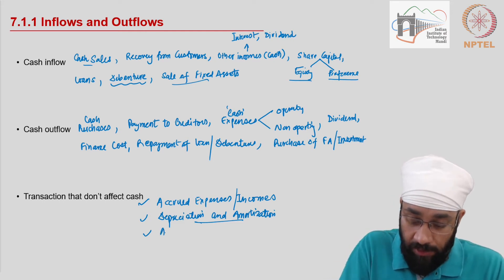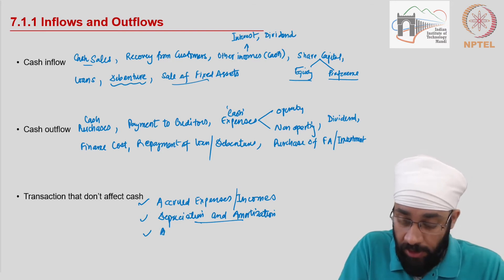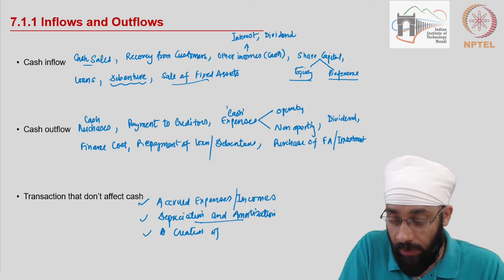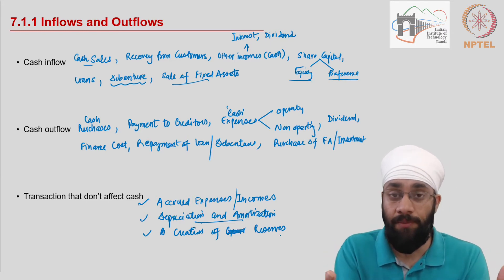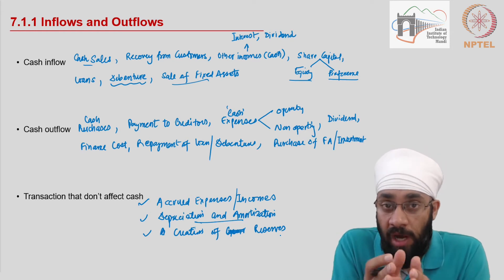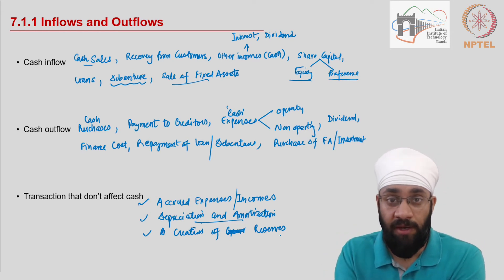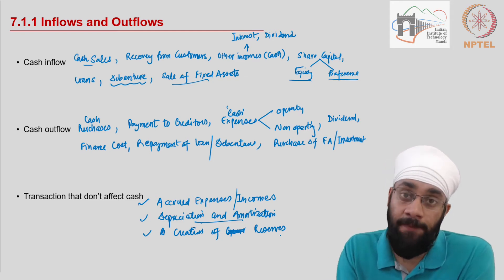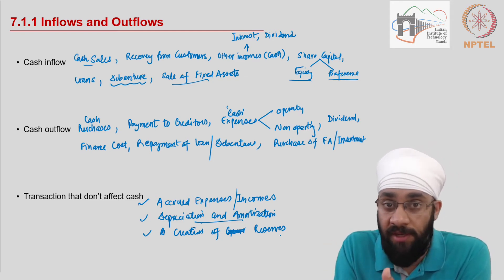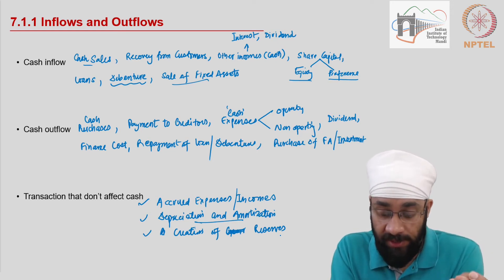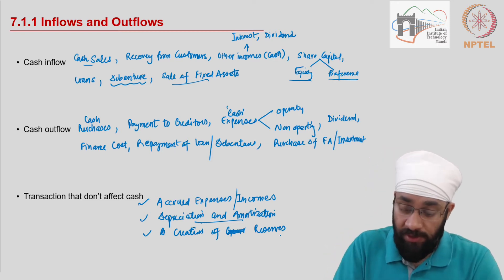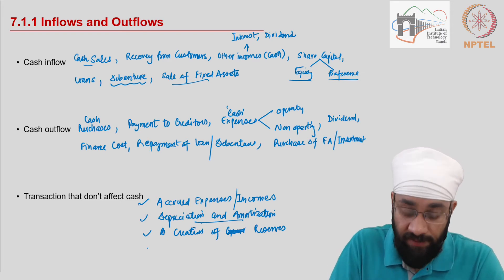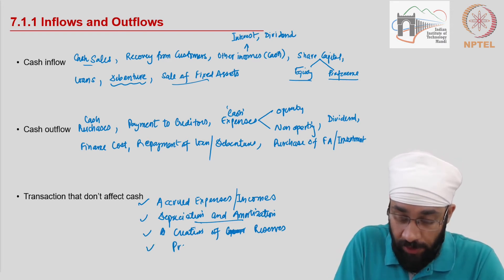Other than this, there can be creation of reserves. Reserves can be general or specific. Creation of reserves basically means you make some profit during the year and then, within the business, out of the profit, you create a separate head and say it's a reserve — to be used for some purpose whenever that purpose arises. This money is not being given to anybody right now, so any creation of reserve does not affect cash.